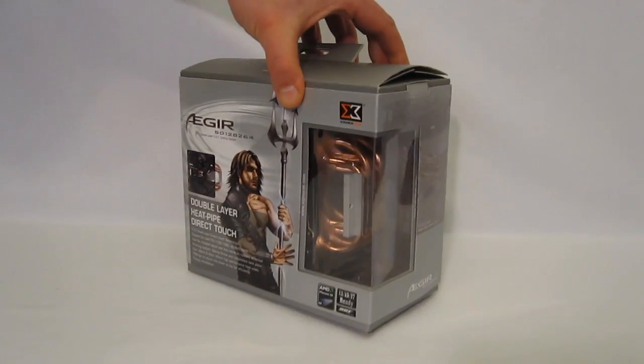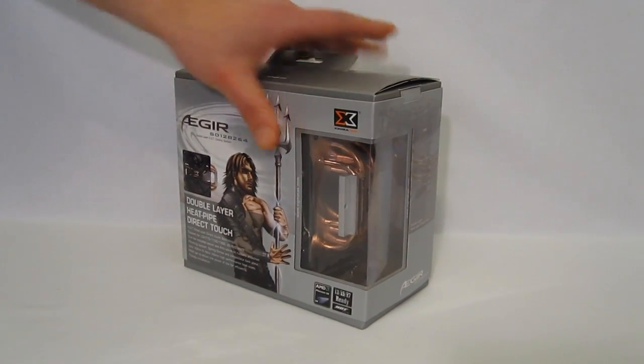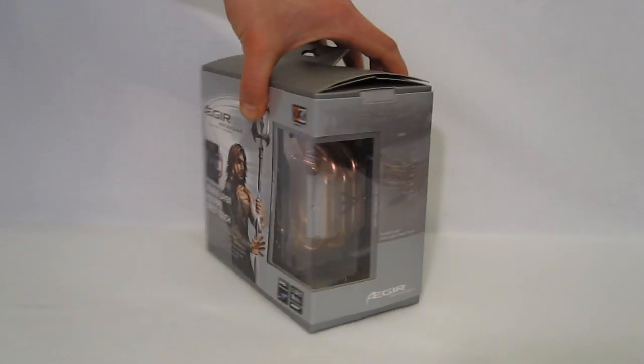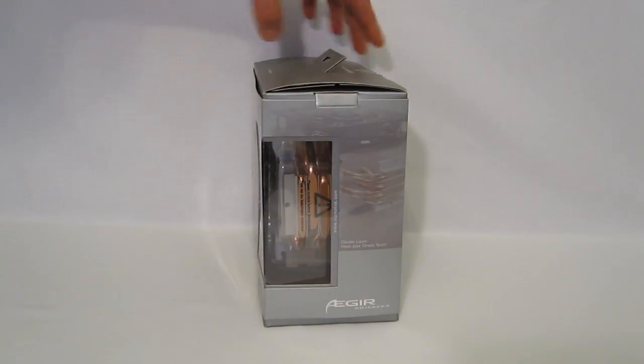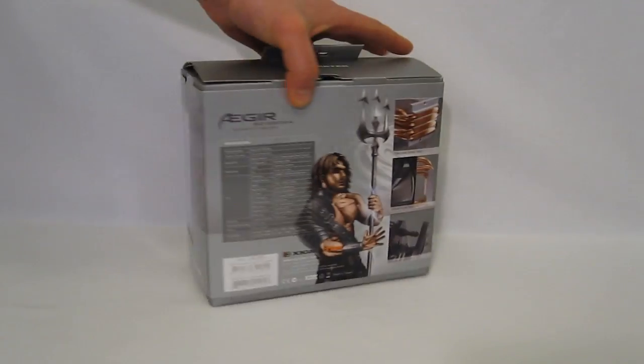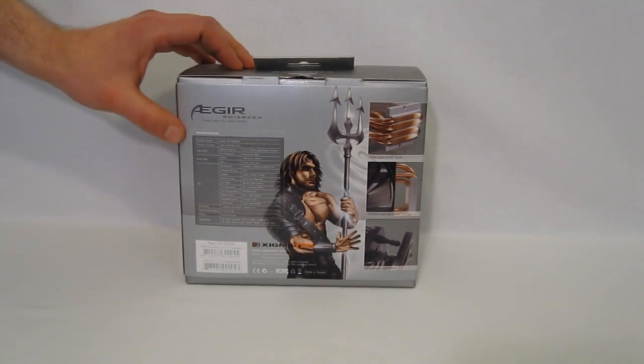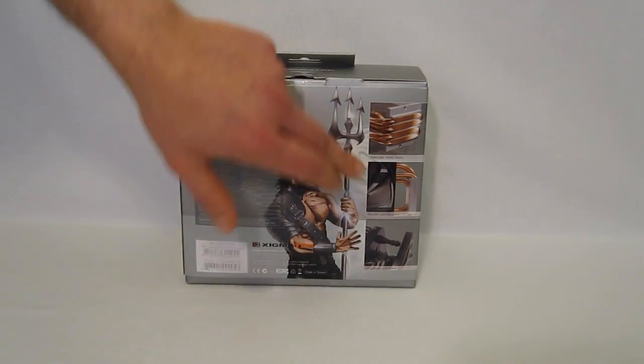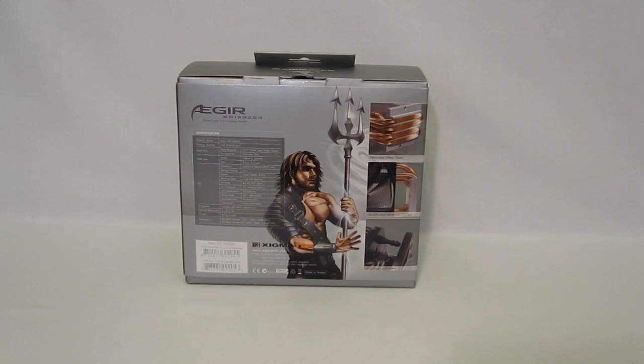Taking a look at the packaging itself, we've got a window so you can actually see the heat pipe and the direct touch of the Edger. On the back of the packaging, it's a full specification chart, as well as close-ups of all the key features of the unit.